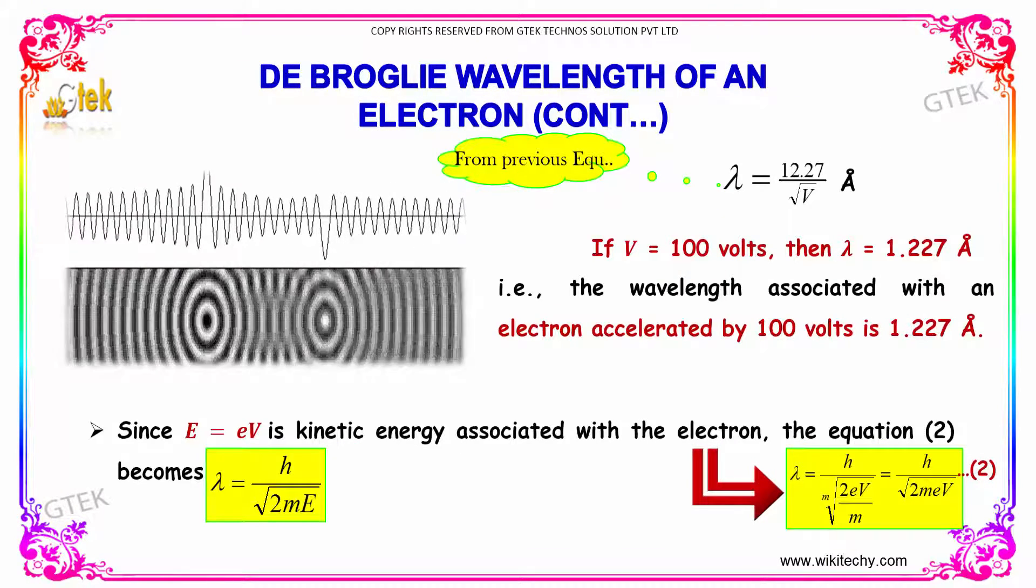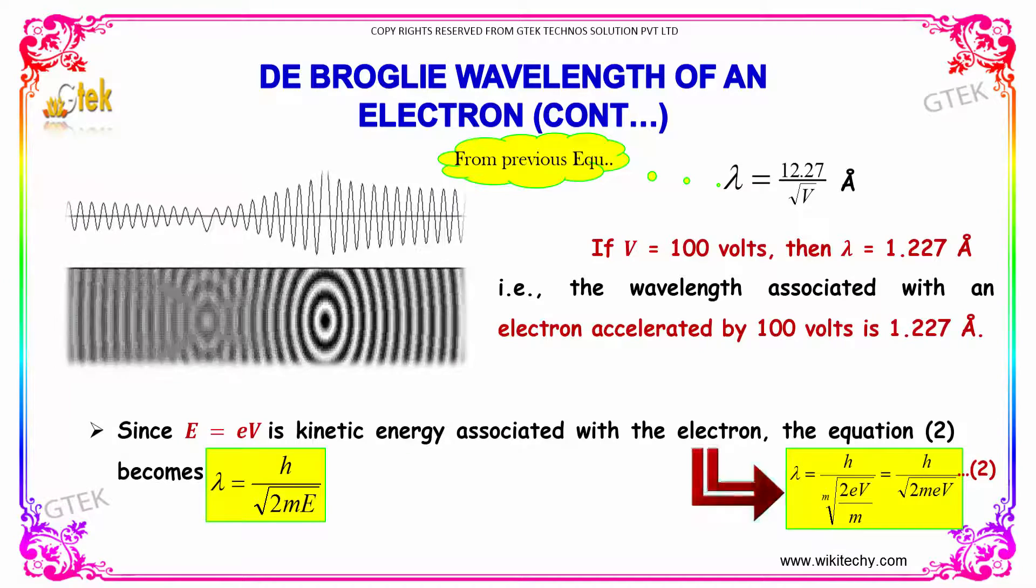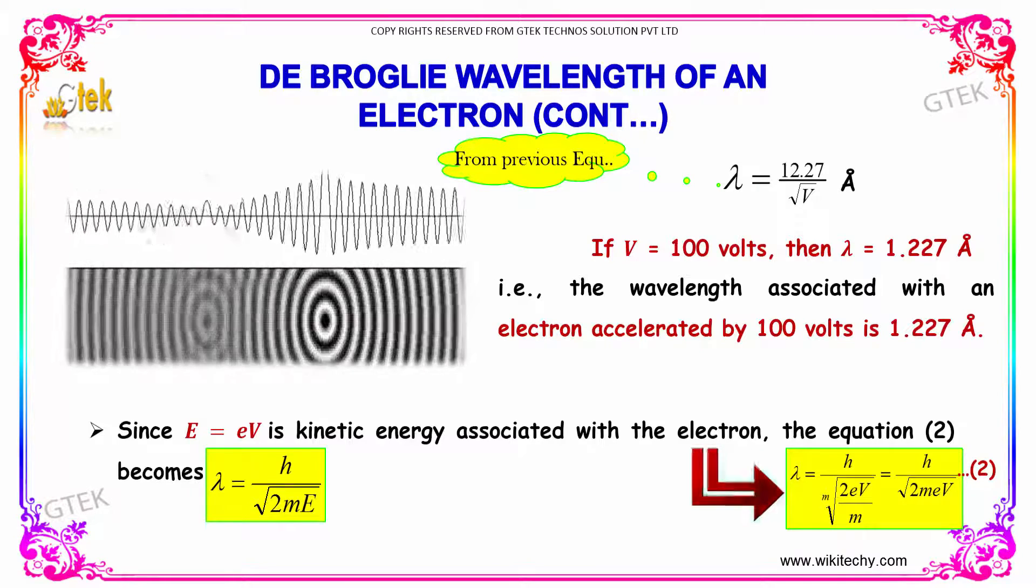Using the previous equation, if V = 100 volts, then λ = 1.227 angstroms. The wavelength associated with an electron accelerated by 100 volts is 1.227 angstroms.